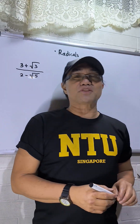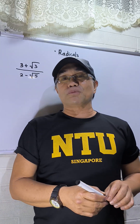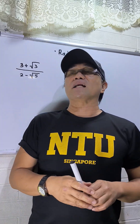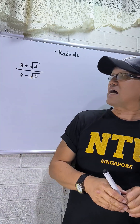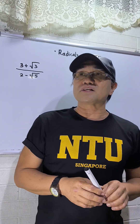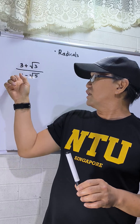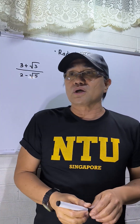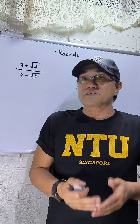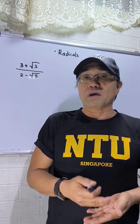Hello to everyone, especially to the students enrolled in the College of Education majoring in Math, and the junior high students. This is your topic in algebra — radicals. As you notice, there are two radicals in the numerator and denominator, so all we have to do is rationalize the denominator. I will give you a specific discussion so that you may understand properly.